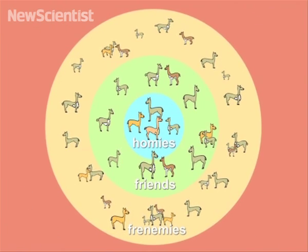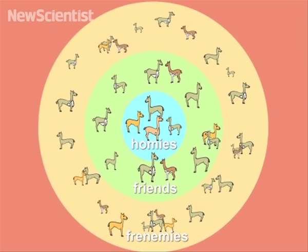Studies of animal societies in the wild have found that each layer tends to be about three times as large as the previous one.